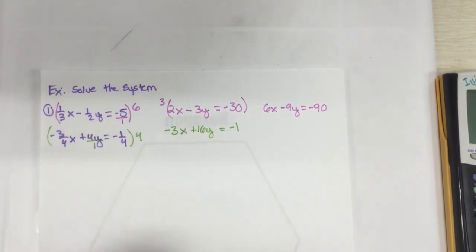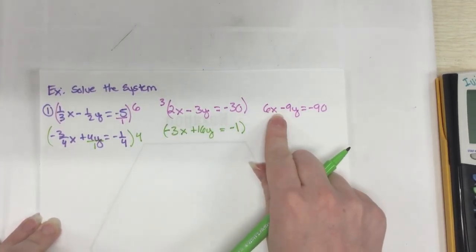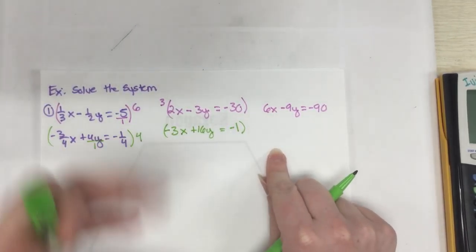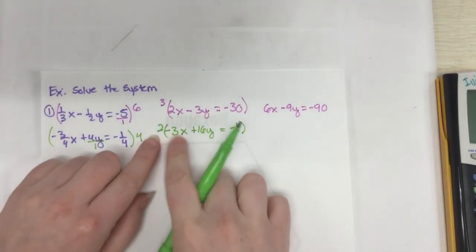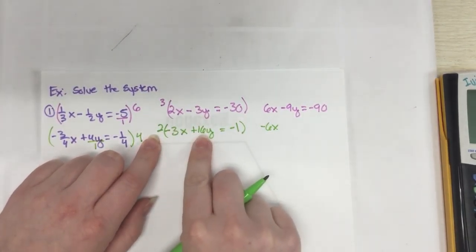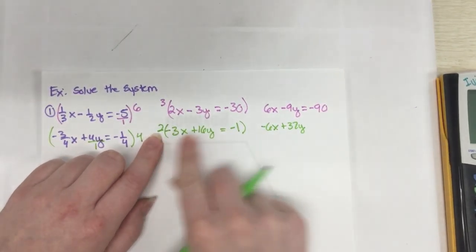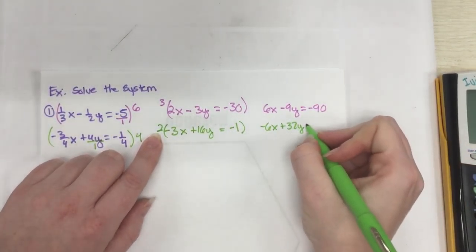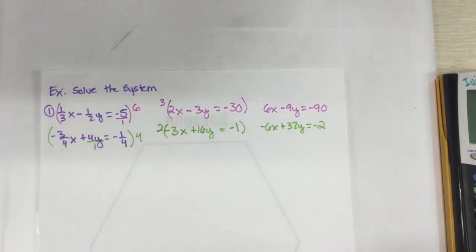And I also want to change this to become, we want this one actually to be a negative 6x, because you want positive 6x minus 6x, and that will make 0. So I'm going to keep that as negative and multiply by 2. And so 2 times negative 3 makes negative 6x. 2 times 16 is plus 32y. And 2 times a negative 1 is negative 2. All right, and so now I have everything perfectly lined up, ready to go for elimination.